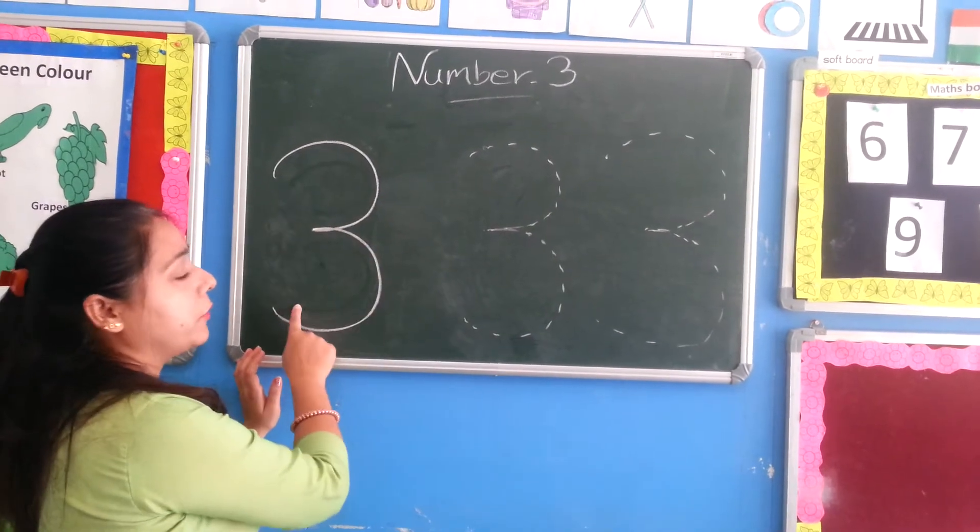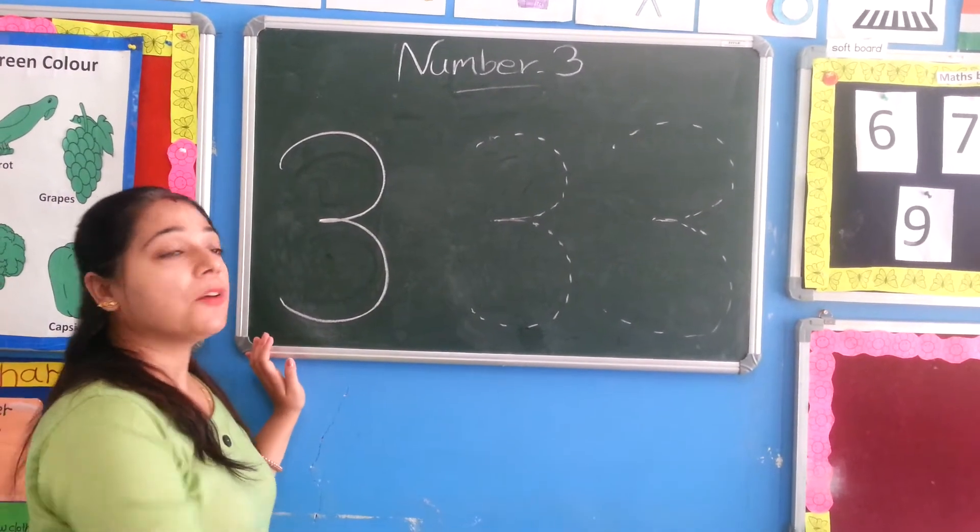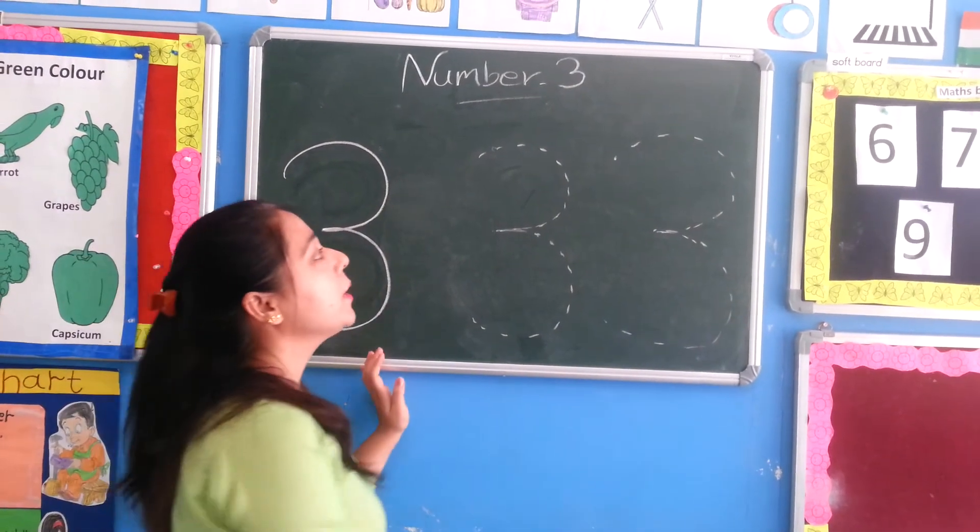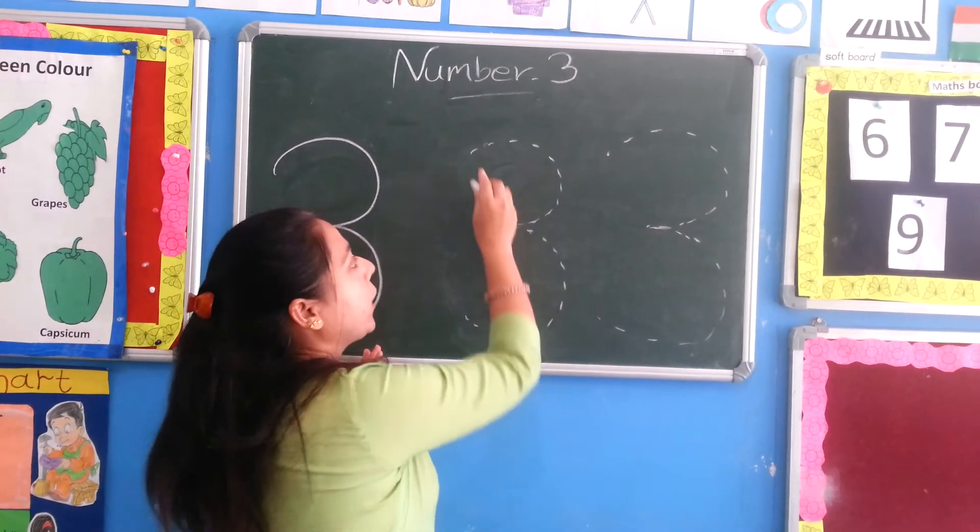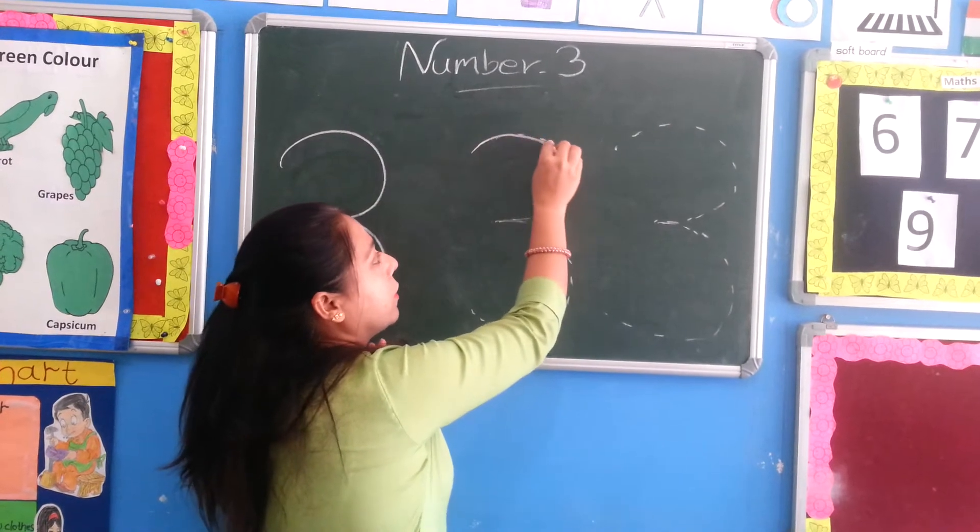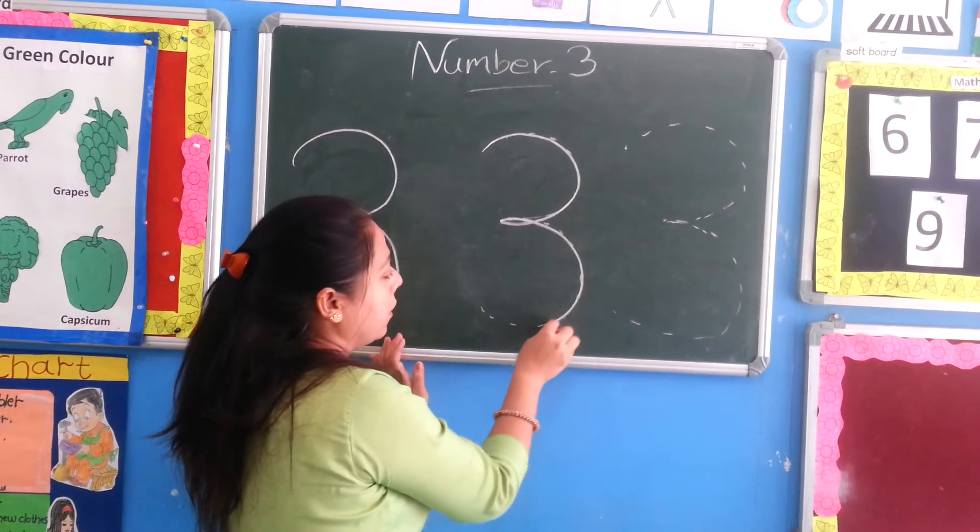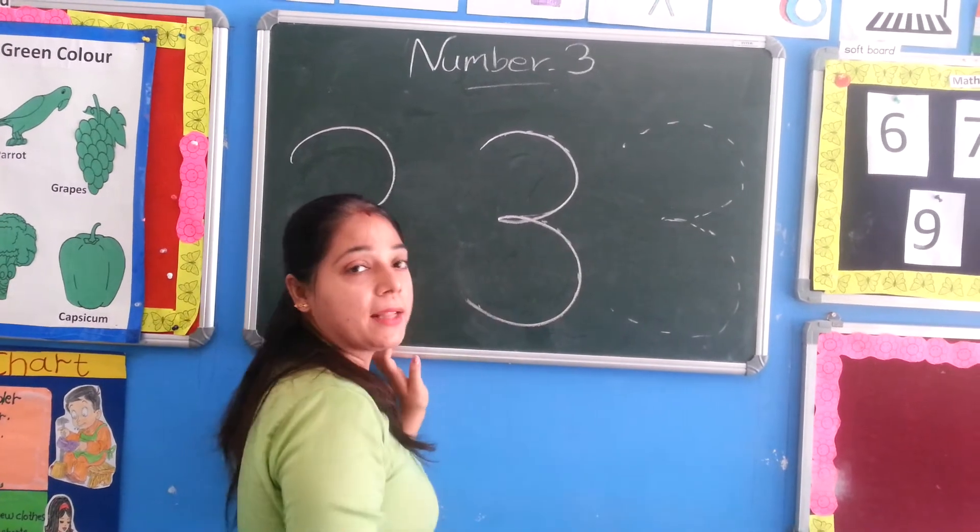One curve, two curves. How many curves do you have? Two curves. One curve, two curves. Now we will do three curves. Curve. One more time. Curve. Like this.